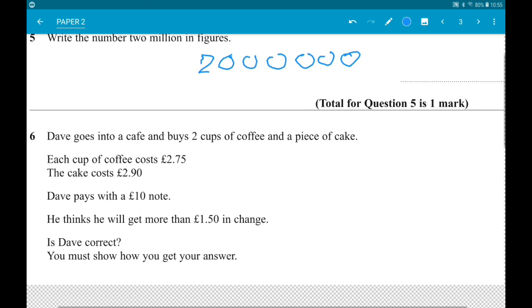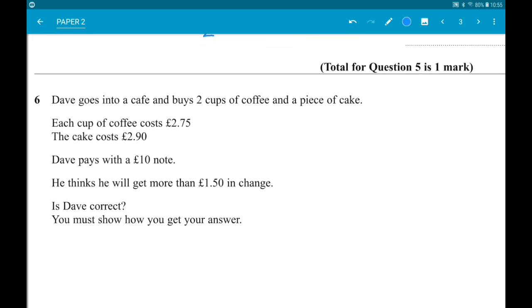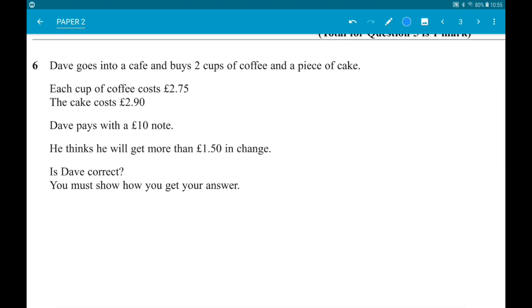Number 6: Dave goes into a cafe and orders two cups of coffee and a piece of cake. Each cup of coffee costs £2.75 and a cake costs £2.90. Dave pays with a £10 note and he thinks he will get more than £1.50 in change. Is Dave correct?